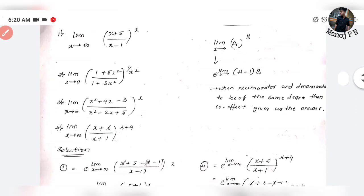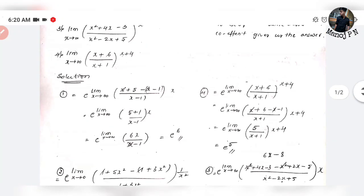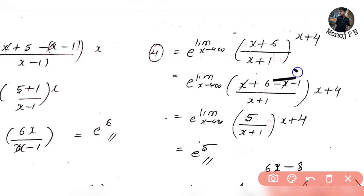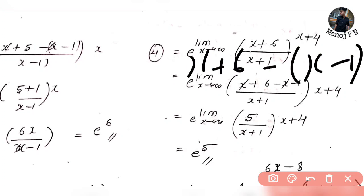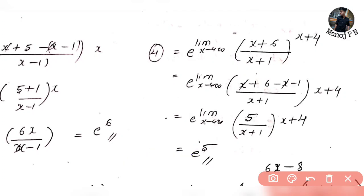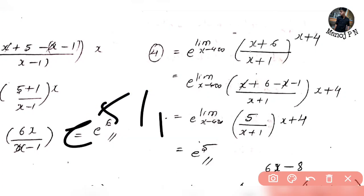The next question: limit x tends to infinity of x plus 6 divided by x plus 1, whole raised to power x plus 4. We compute x plus 6 minus x minus 1 equals 5, so the numerator becomes 5 divided by x plus 1, times the power x plus 4, giving 5x plus 20 divided by x plus 1. Since the degree is the same, the coefficient gives e raised to power 5 by 1, which is e to the power 5.